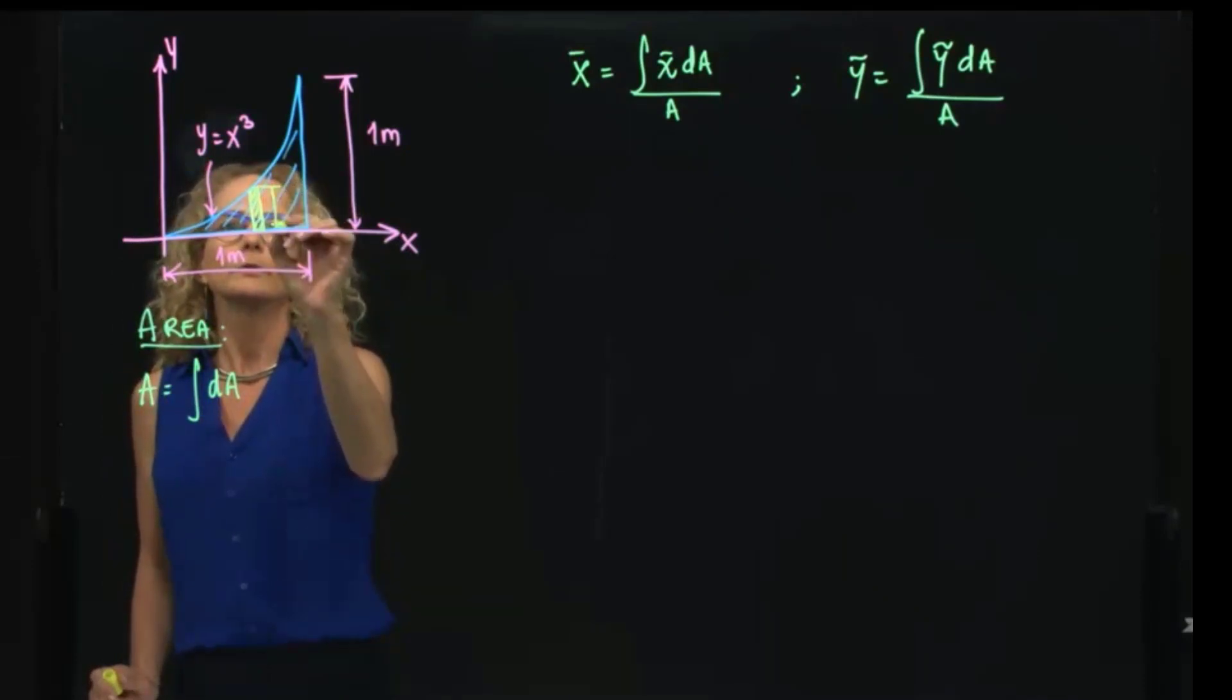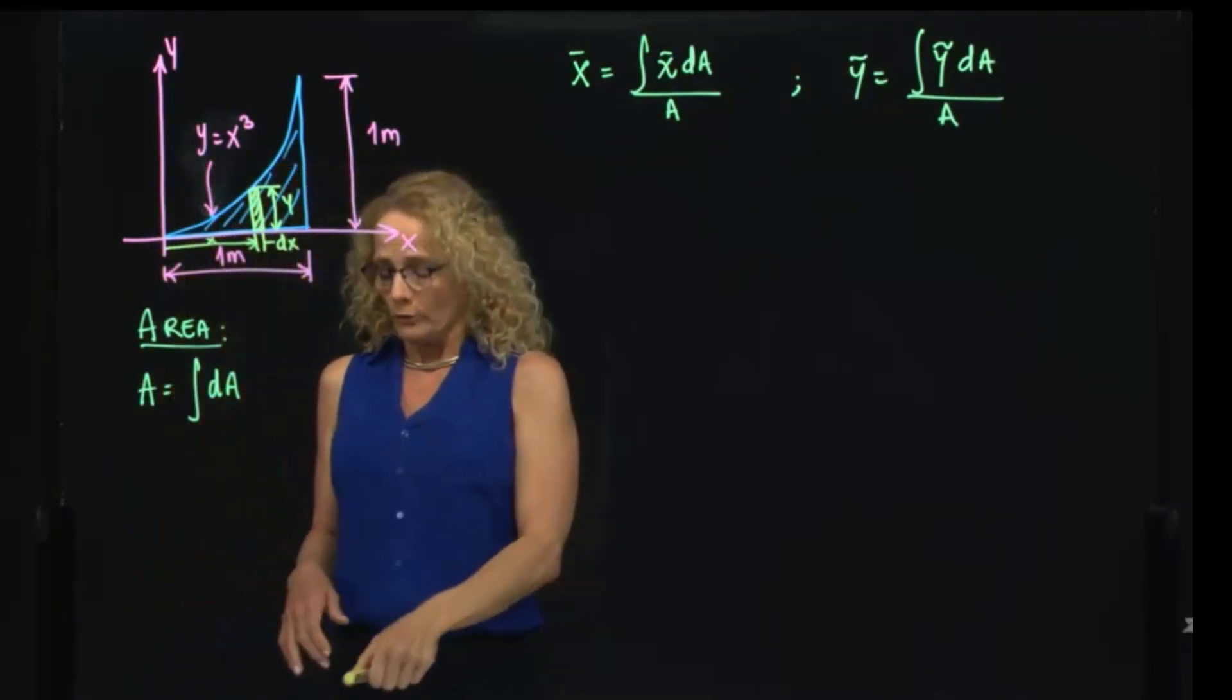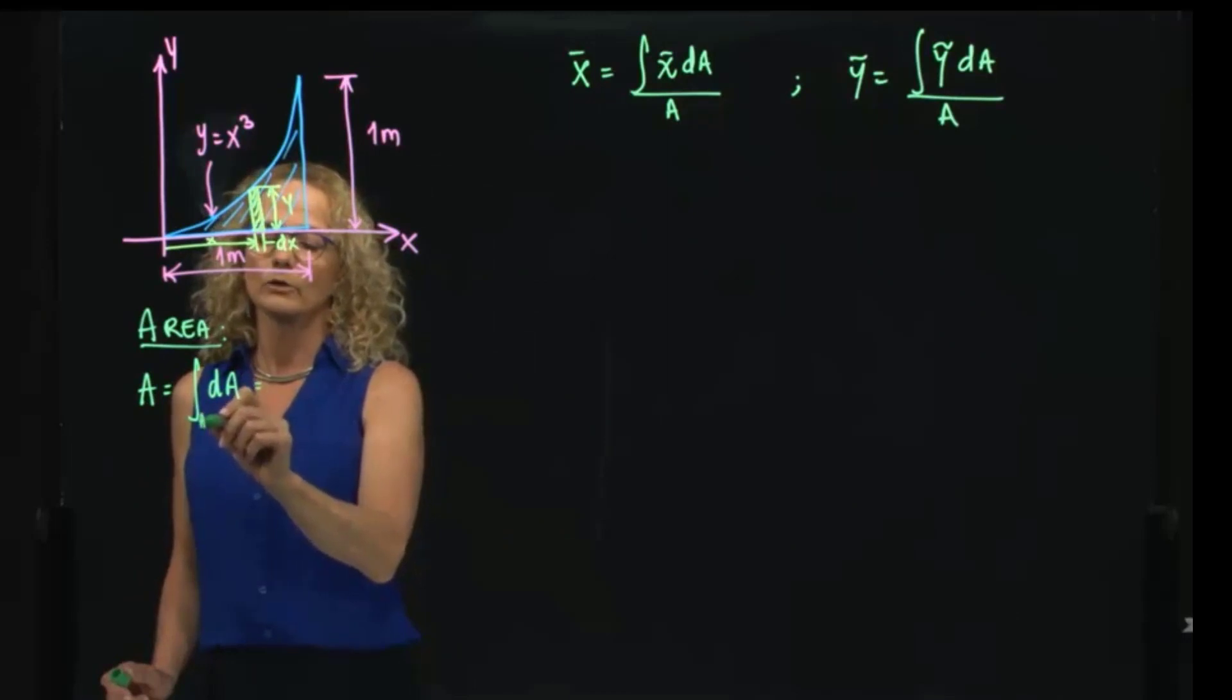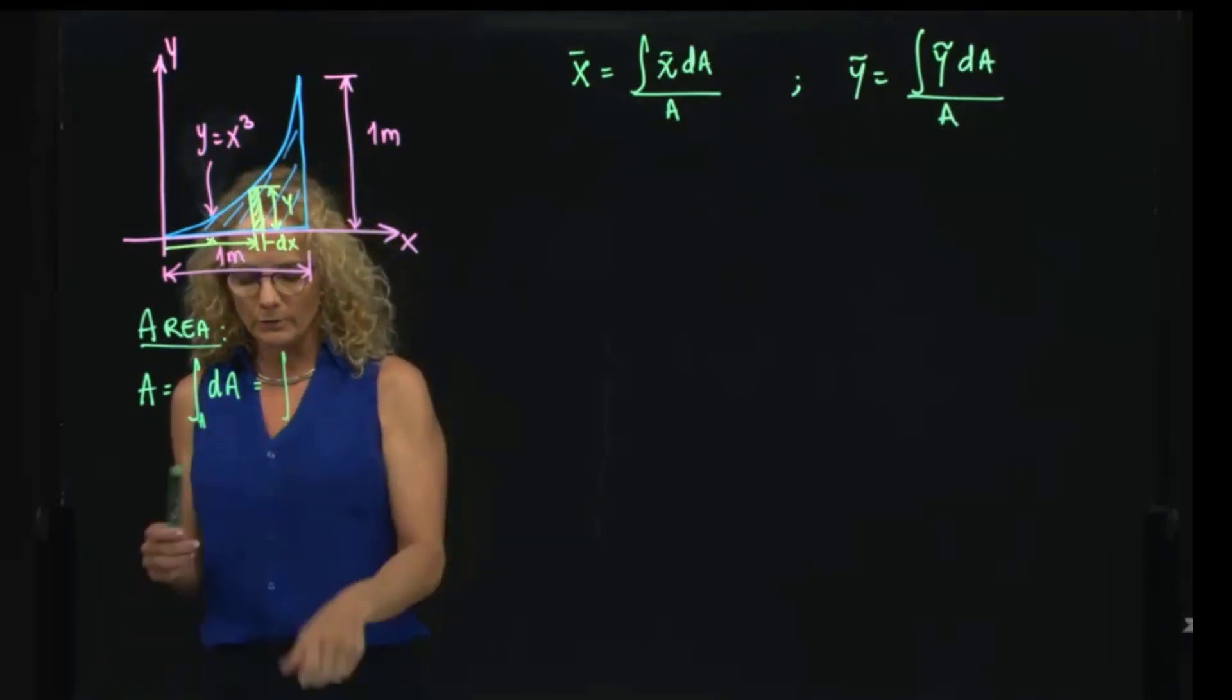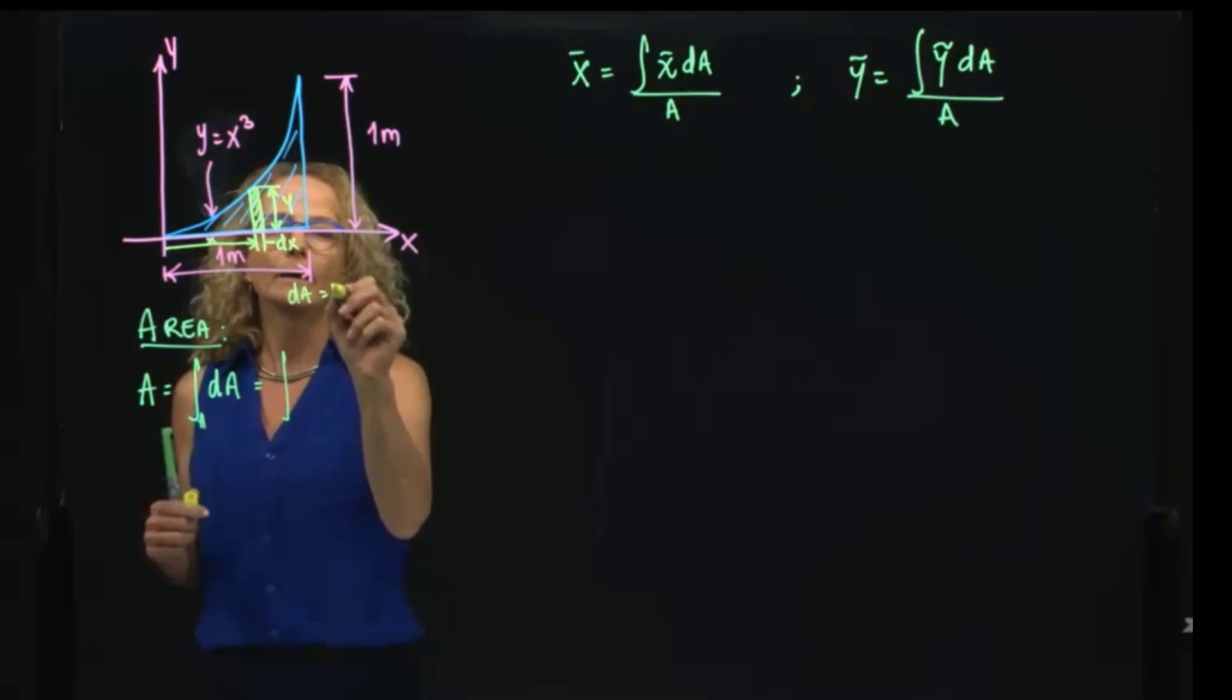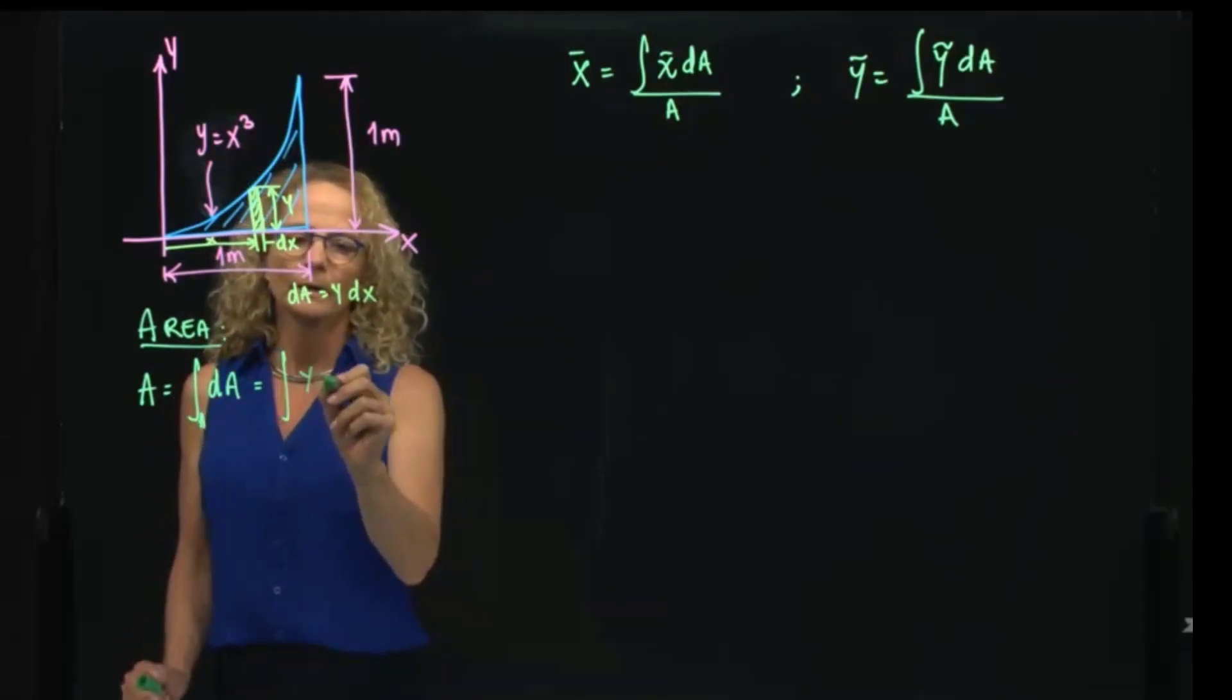This vertical strip will be y, and this will be dx, and the x will be located at x. So we can write my differential of area. Instead of doing a double integral, we can do a one-dimensional integral. The differential of area will be y dx.